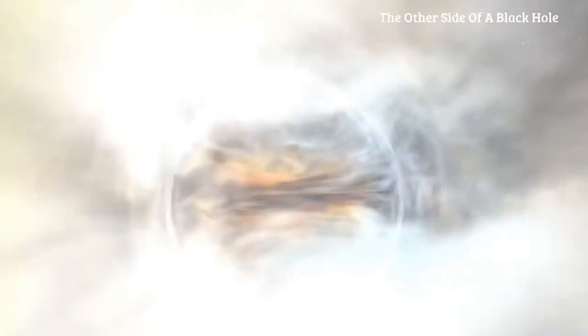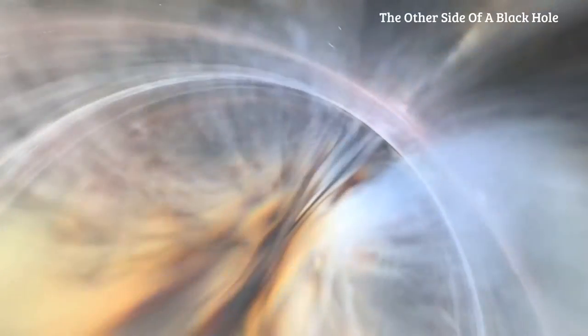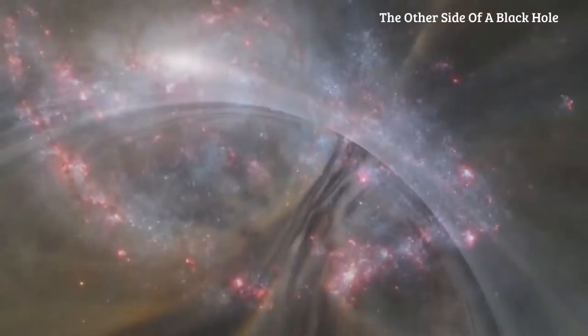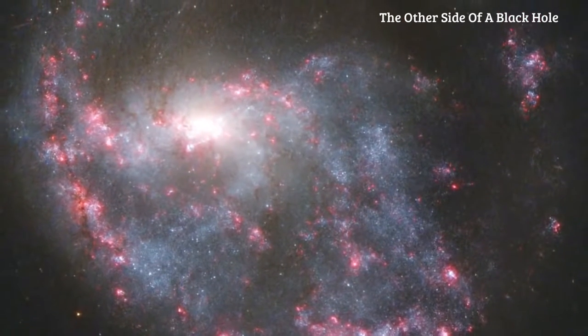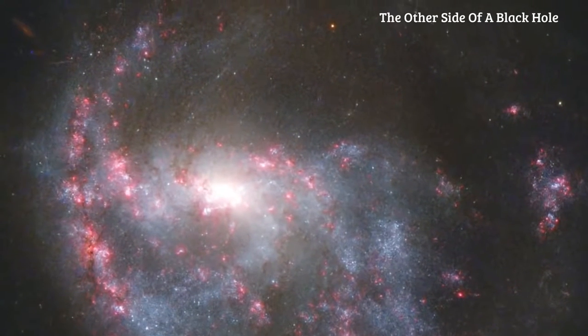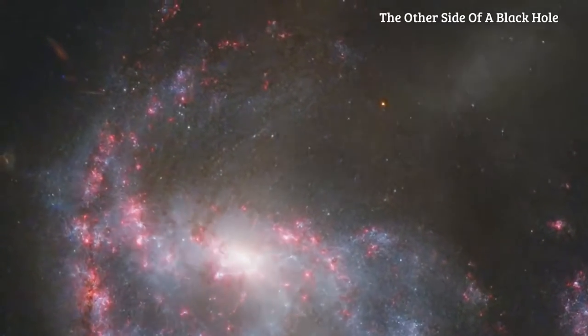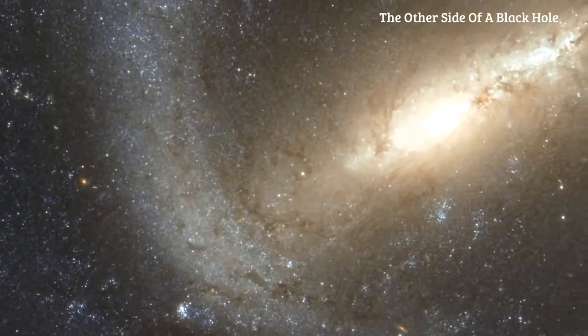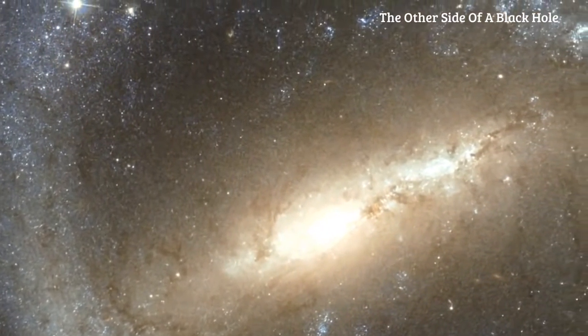This observation came at a time when astronomers had begun to believe that supermassive black holes play an active role in the evolution of galaxies. They had found that they occupy the centers of nearly every large galaxy. In fact, the larger the galaxy, the larger the black hole. That suggests that the two must have evolved hand in hand, each shaping the life story of the other.